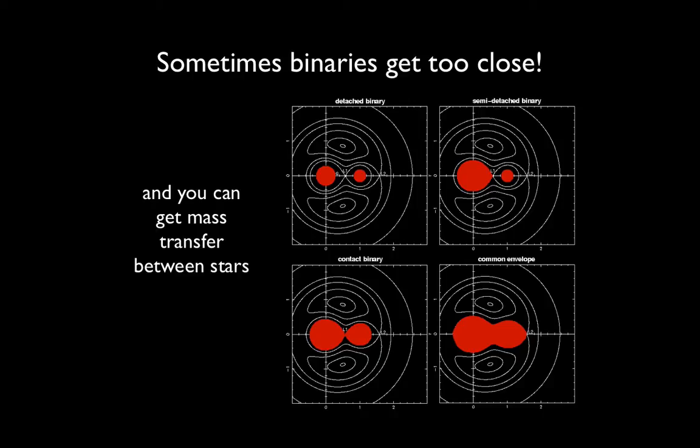Binary stars can sometimes get too close. And they can start directly interacting with each other. Gas from one's atmosphere can be pulled onto the other one, for example, in what we call an episode of mass transfer. This happens often when a big, puffy star, like a red giant, orbits a close-by star. The material at the surface of the star is so far from the core that the gravity there is weak, and it can easily be pulled off by a nearby orbiting massive object.